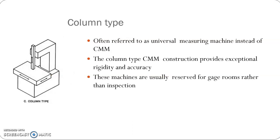The column type is also known as universal measuring machines. This construction provides maximum rigidity and accuracy. The table movement provides both the X direction and Y direction movements for the workpiece, and the Z direction is given for the probe head.